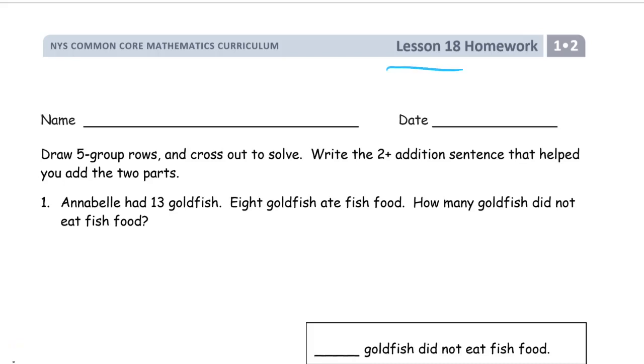Welcome to the homework for lesson 18. This is module two of grade one. Get your name on here first. And what we're doing now is drawing five group rows and crossing out to solve. We have to have that picture, and then we have to also write a two plus addition sentence that helped you add the two parts.